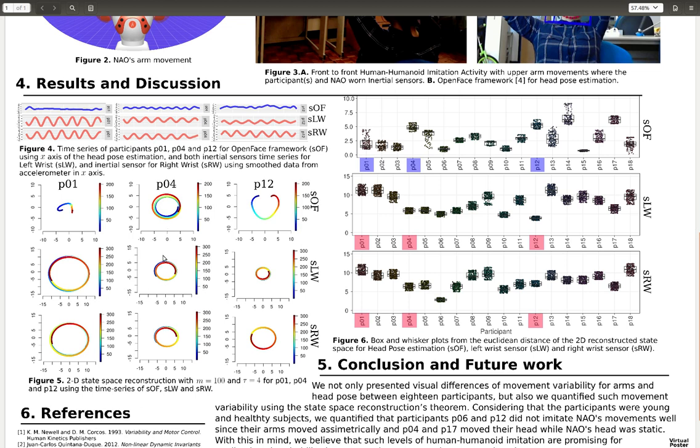Then, in order to quantify this, what we did is to compute the Euclidean distances between the point (0,0) to each of the points from the trajectories of this 2D space reconstruction. What we got is the following box plot. All that you see here is all these points which are computed by the Euclidean distances. And these results are for the OpenFace framework for the head pose estimation for participant 1 to 18. And then I highlight this is for participant 1, 4 and 12.